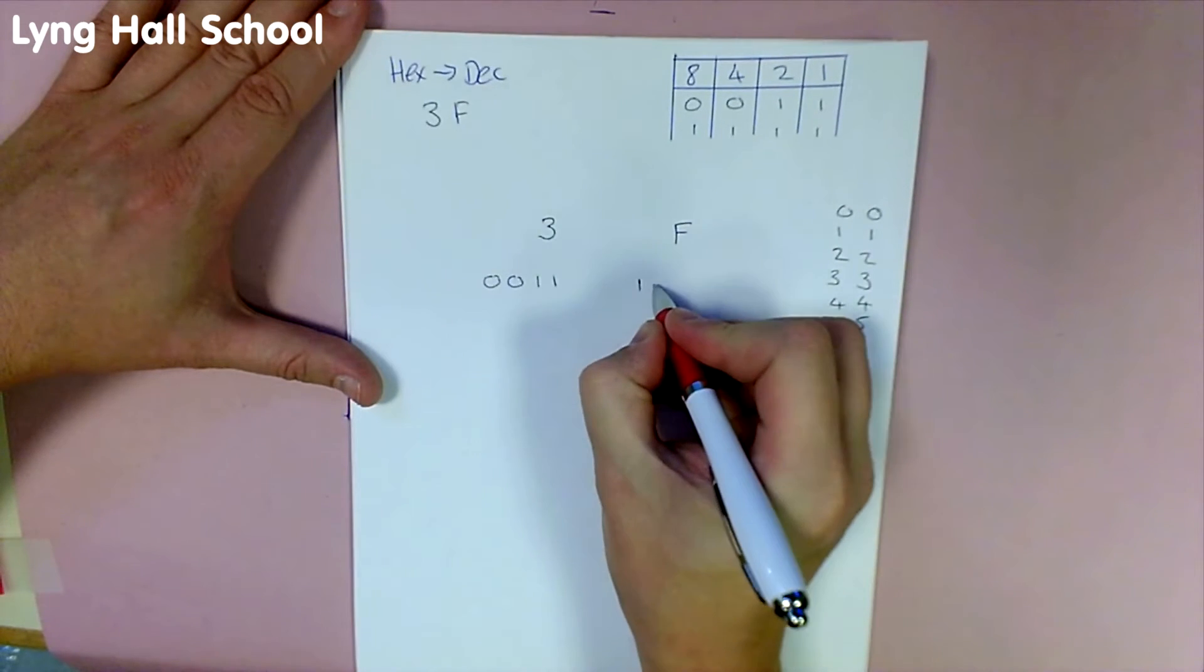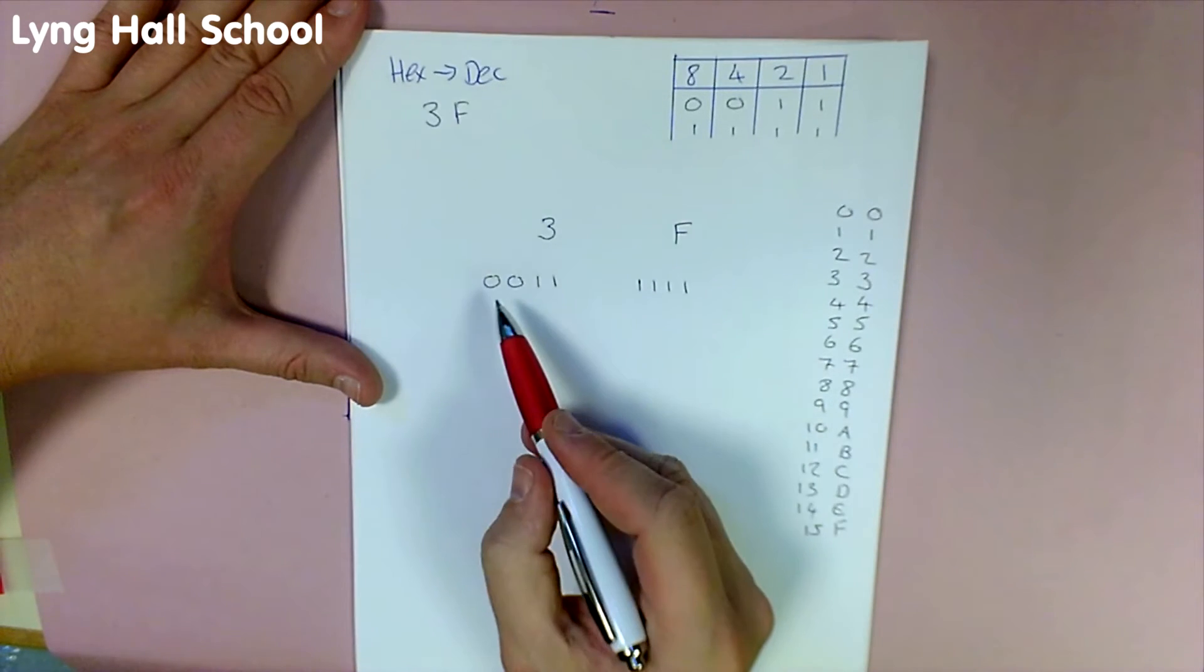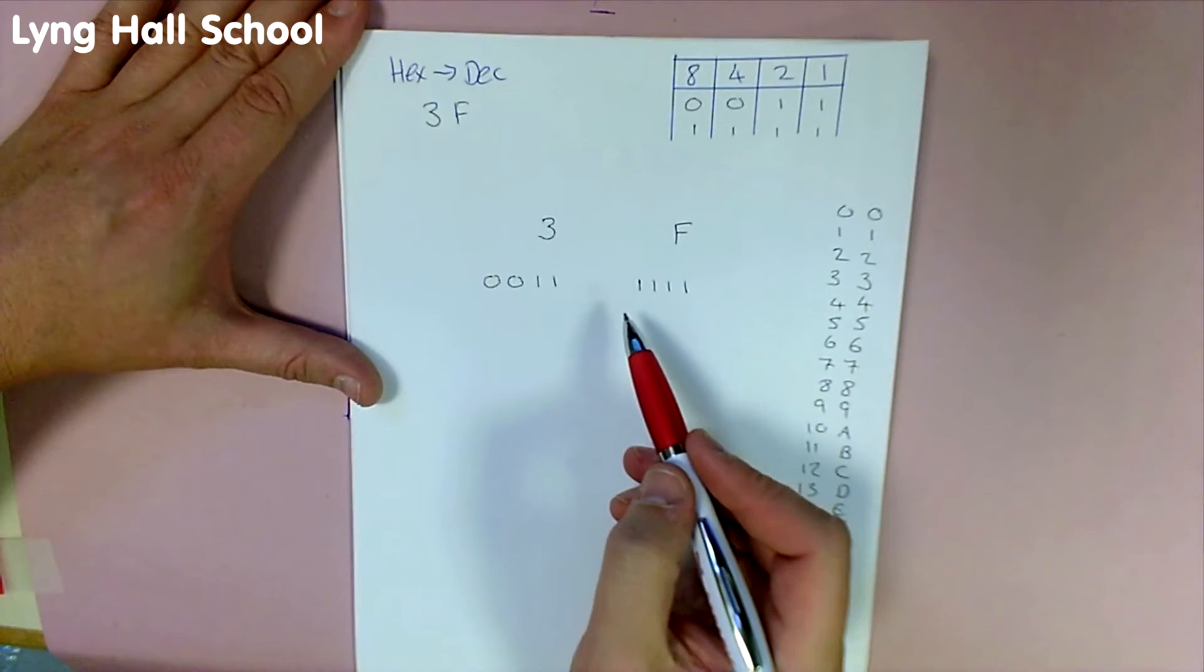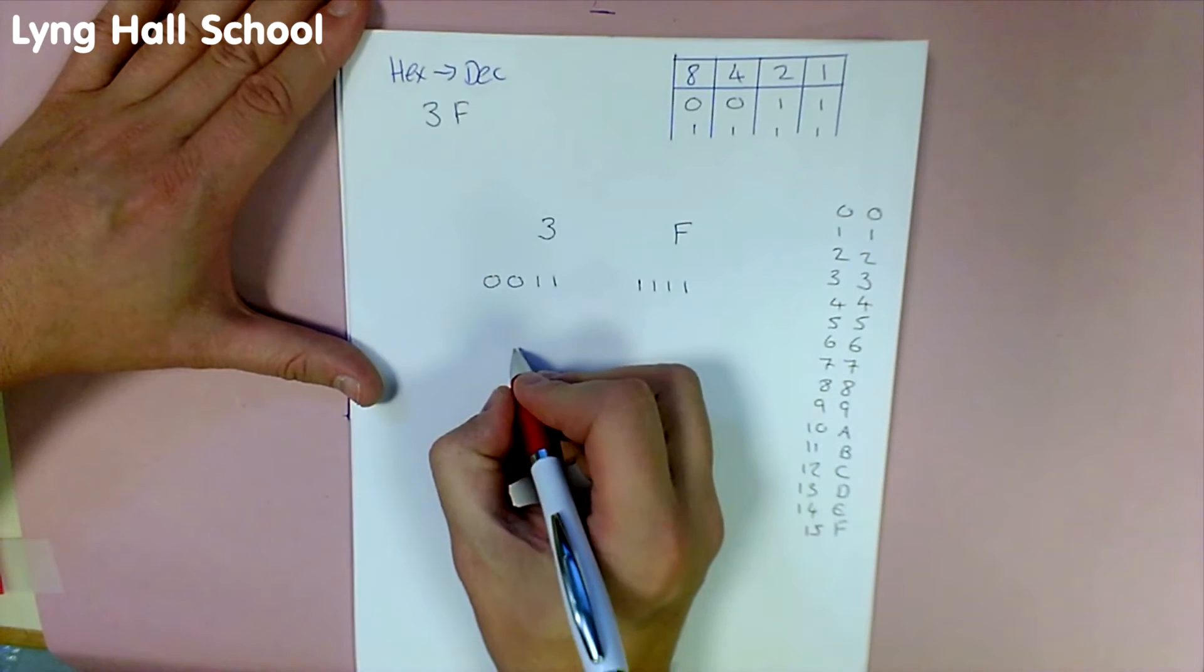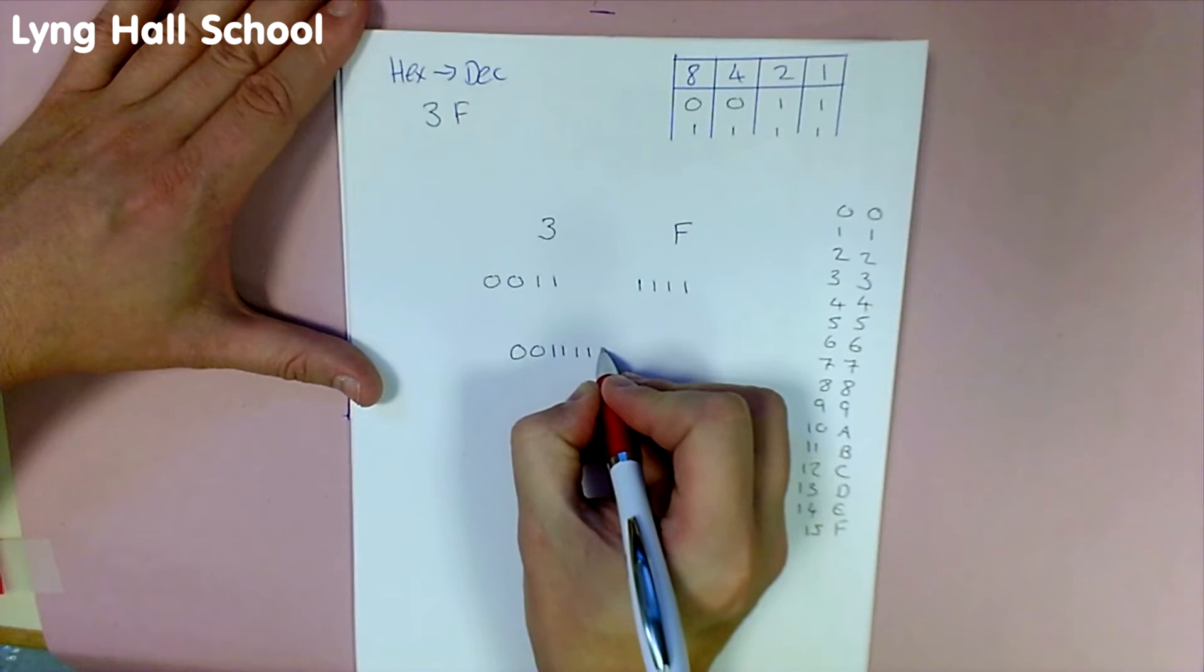So we'll write this underneath F: 1, 1, 1, 1. Our job then is to put this as one long 8-bit binary number: 0, 0, 1, 1, 1, 1, 1, 1.